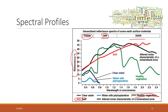If we look at vegetation, we can see that it has relatively high reflections in the green band — that's why most vegetables appear green. Vegetation also has very high reflection in the near-infrared band.